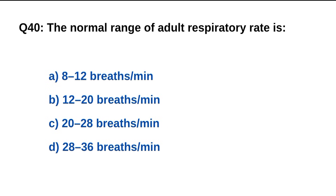Question number 40. The normal range of adult respiratory rate is? The right option is B: 12 to 20 breaths per minute.